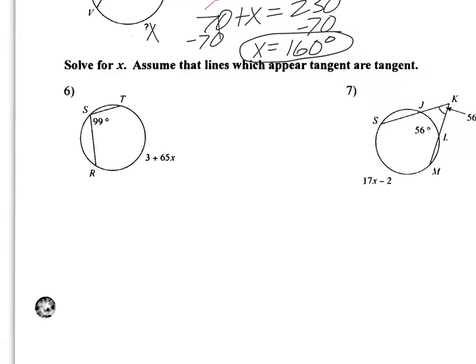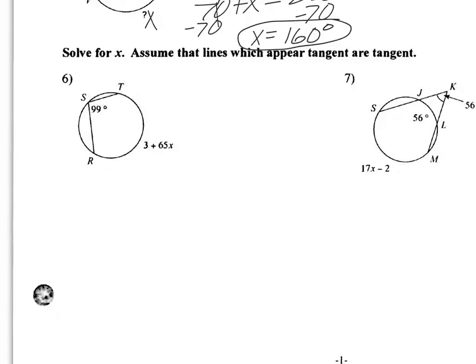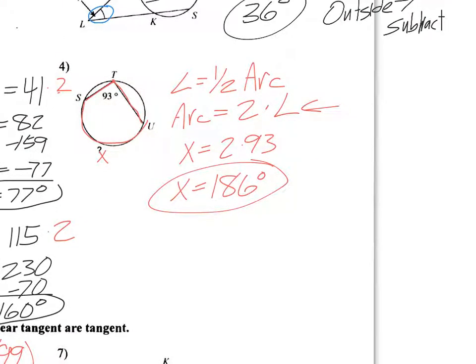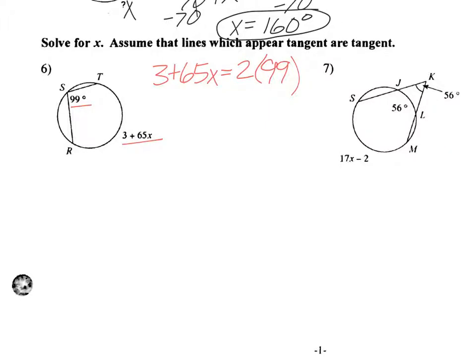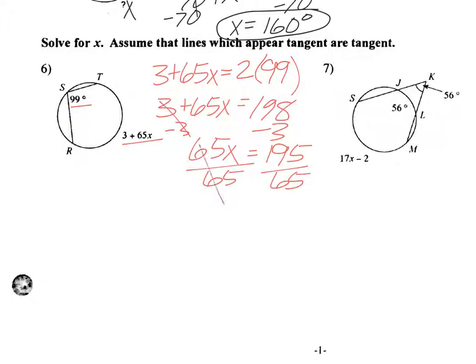What about problem number 6? Same type of situation. The only difference is here we're having to solve an equation. So remember, here's our angle. Here's our arc. The arc is equal to 2 times the angle. Going back to the problem right up here in number 4. The arc is equal to 2 times the angle. So don't forget these relationships. Some of them are repeated, so it's good that we're repeating them. Hopefully you'll remember them. So I get 3 plus 65x equals, I do 2 times 99, and that gives me 198. Subtract 3. 65x equals 195. Divide by 65. And then that gives me x is 3.